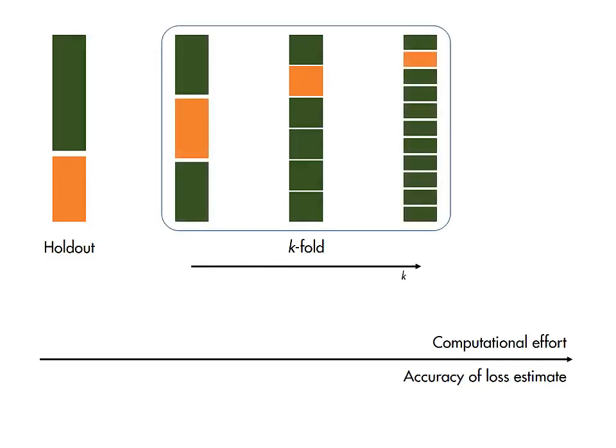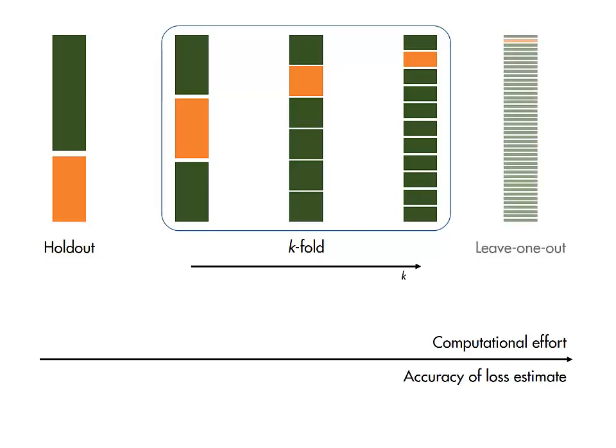The bigger the value of k, the more computation, but the more robust the loss estimate. The limiting case of k equal to the number of observations results in a single observation being used each time for validation. This is known as leave-one-out cross-validation.